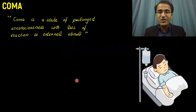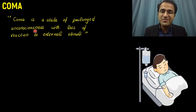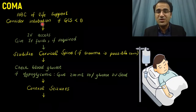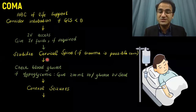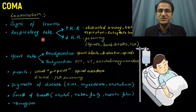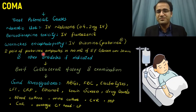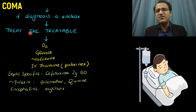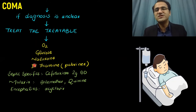In summary: coma is a deeply unconscious state. Causes include metabolic and neurological categories. The approach involves ABC, stabilizing the cervical spine, checking glucose, and controlling seizures. Examine for common causes, treat potential causes, take brief collateral history, and send investigations. If the diagnosis is unclear, treat the treatable: oxygen, glucose, naloxone, IV thiamine, and specific treatments as indicated.